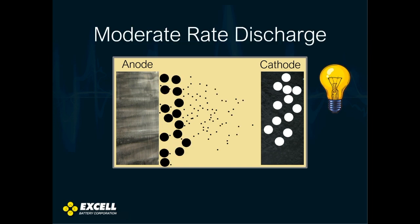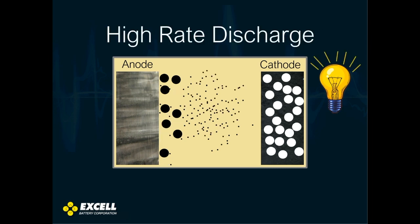But as the current goes up, you need to break up that passivation layer to increase the porosity to allow more lithium ions to transfer from the anode to the cathode. As the light bulb gets brighter, the passivation layer has to be broken up more. When you have a very high rate discharge, you really have to break up that passivation film for more pore areas and more ionic transfer to take place.